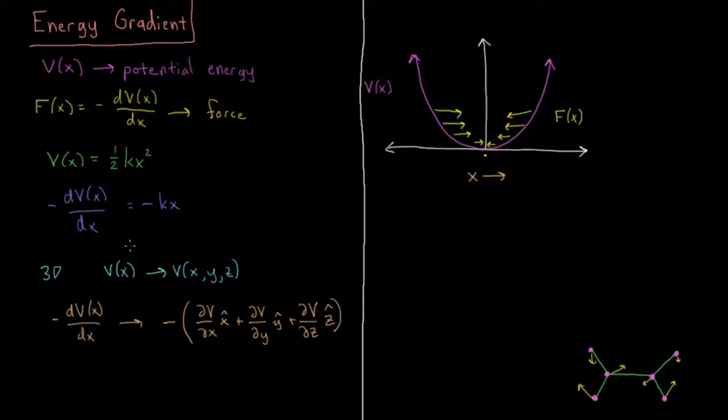So this, as you might notice from calculus, could also be expressed as minus del, upside-down delta, make sure I draw it the right way, minus del V of x, y, z.